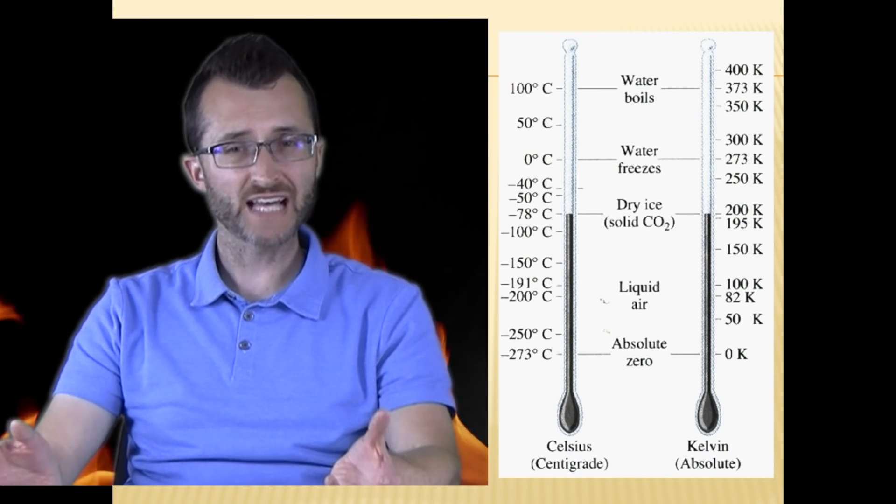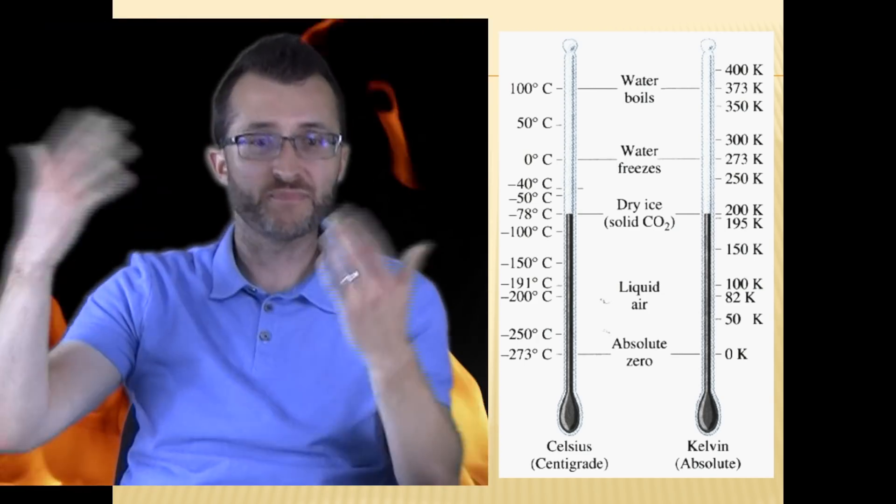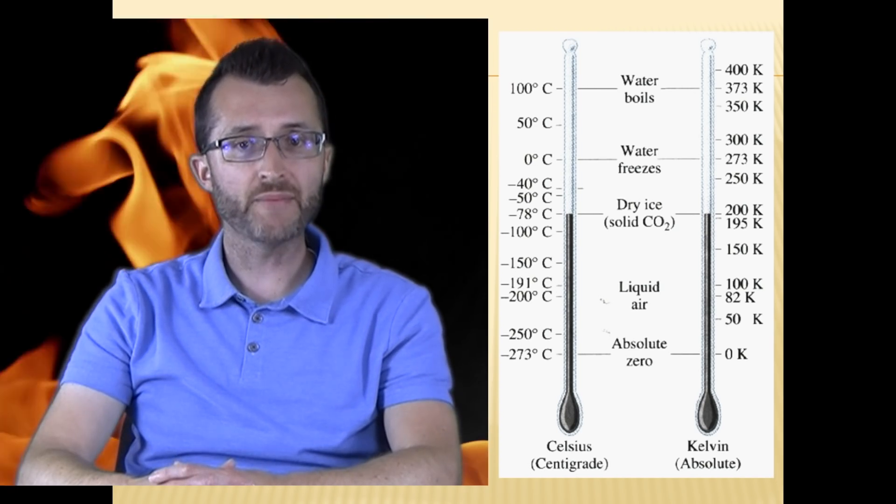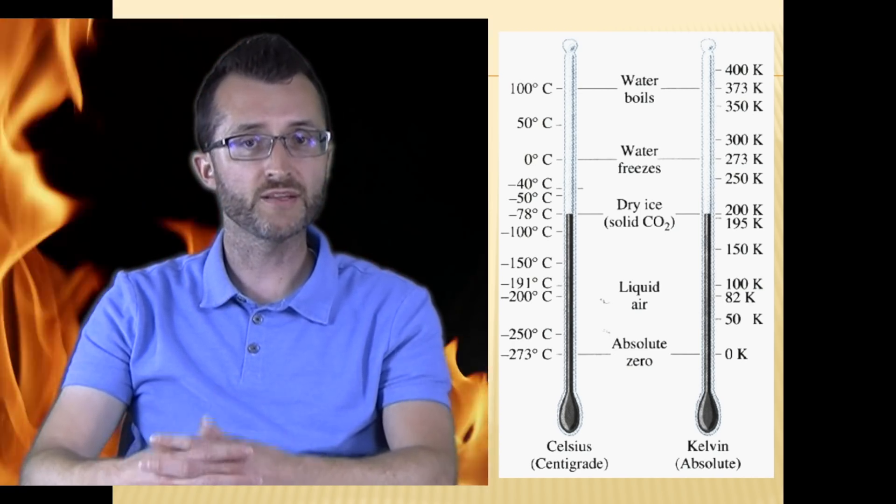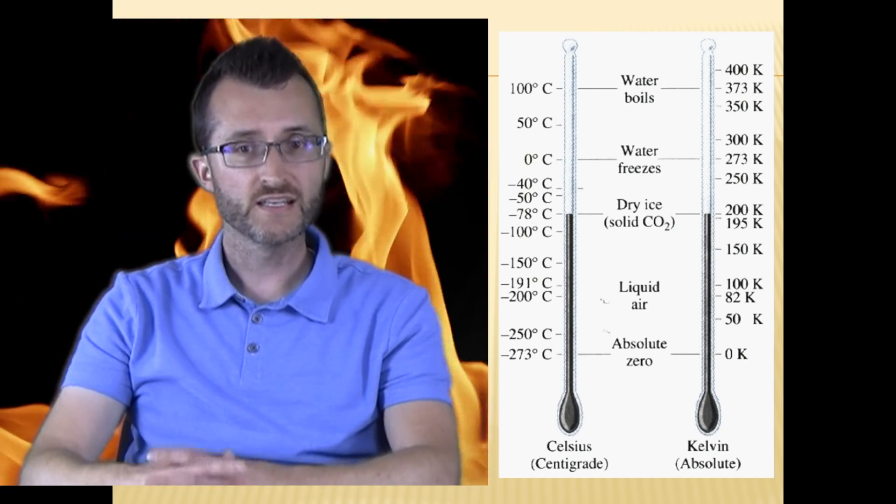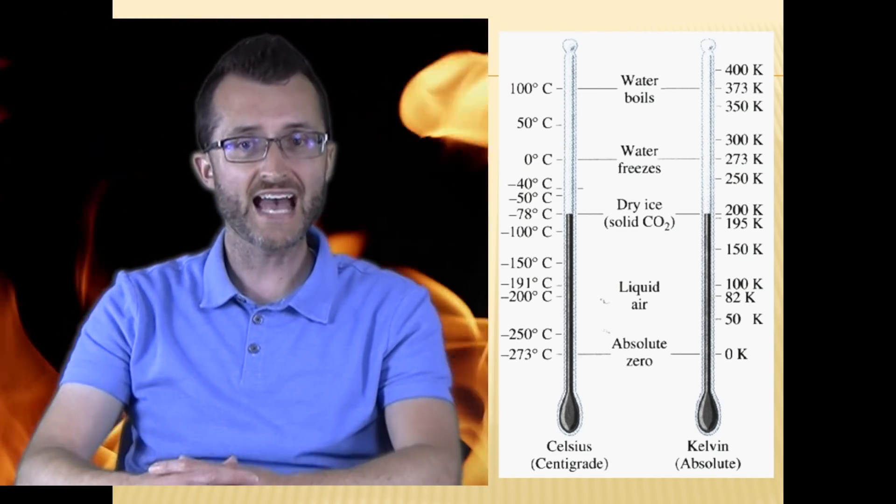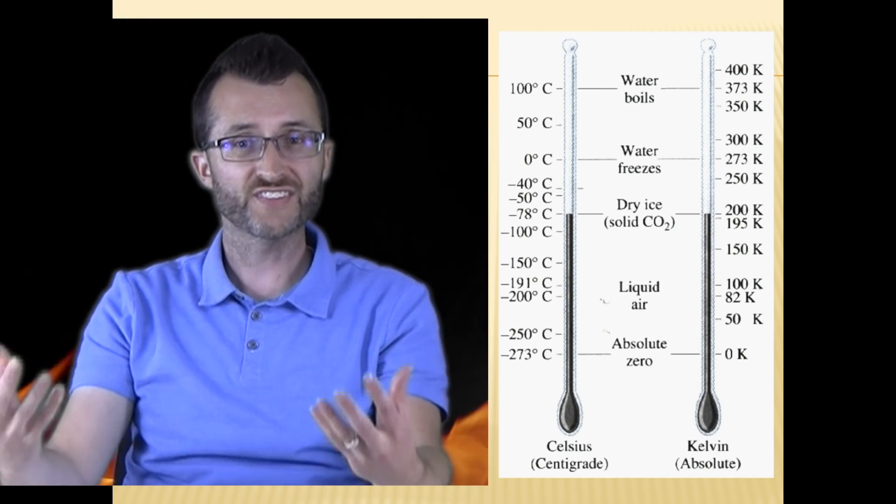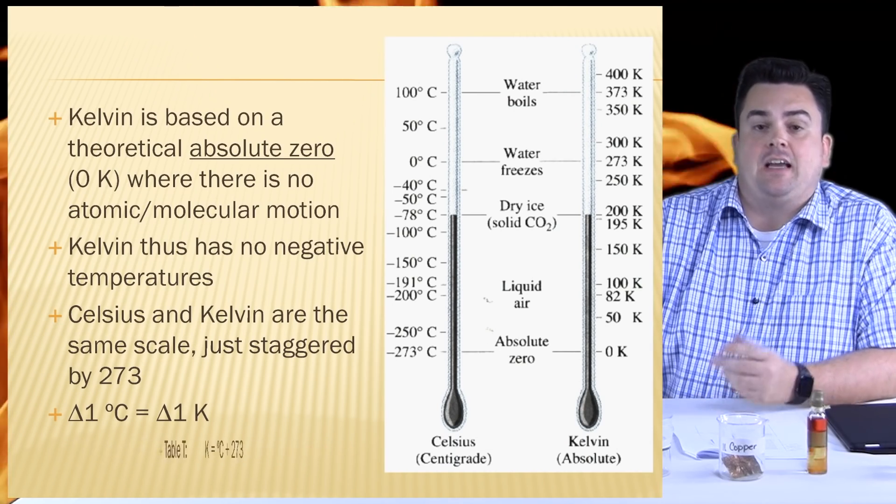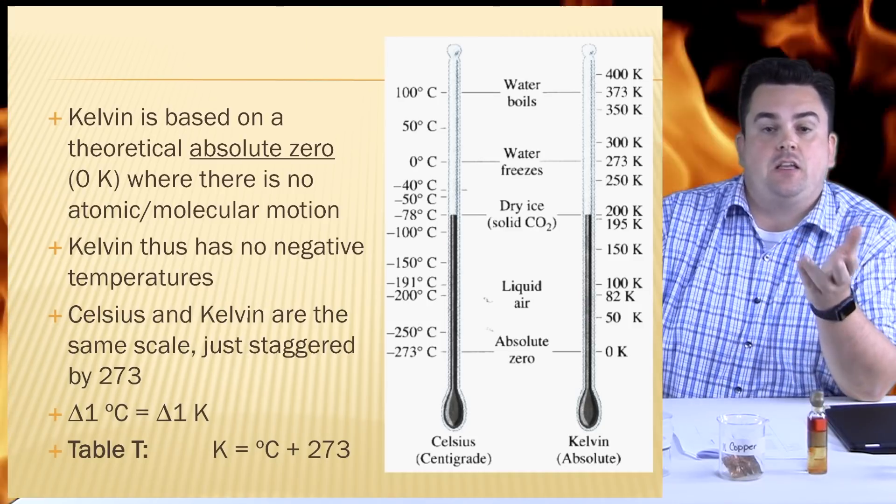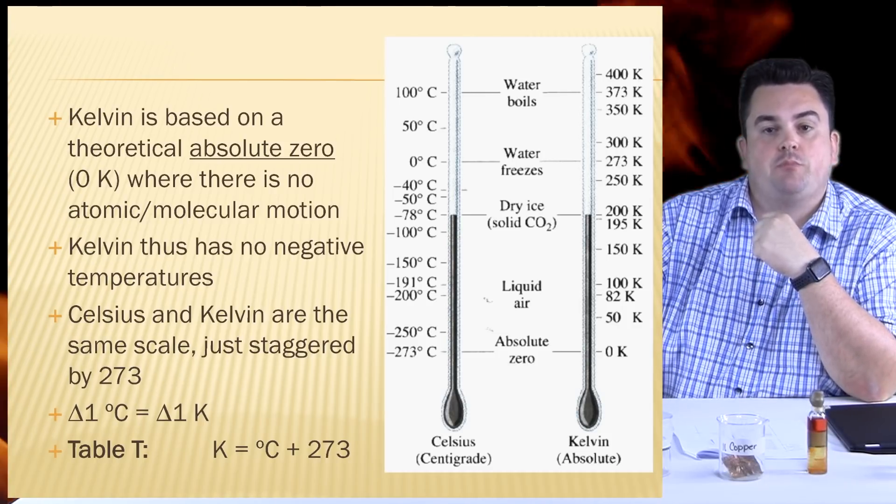I want you to think of the two scales as two ladders. The distance between the rungs is exactly the same in the two ladders, but those two ladders are just staggered off by 273. If we take a look at the two thermometers and we look at the Celsius scale, we see that from zero degrees to 100 degrees, the freezing point and boiling points of water respectively, we have a difference in 100 degrees. If we look over at the Kelvin scale at 273 Kelvin and 373 Kelvin, the freezing and boiling points, again, we see that the difference is 100 Kelvin. Thus the scales are the same. They're just off by 273. Alright. And lastly, table T, again, this has all the formulas you're going to need this year, has the conversion for going from Kelvin to Celsius or vice versa. And that formula is Kelvin equals degrees Celsius plus 273.